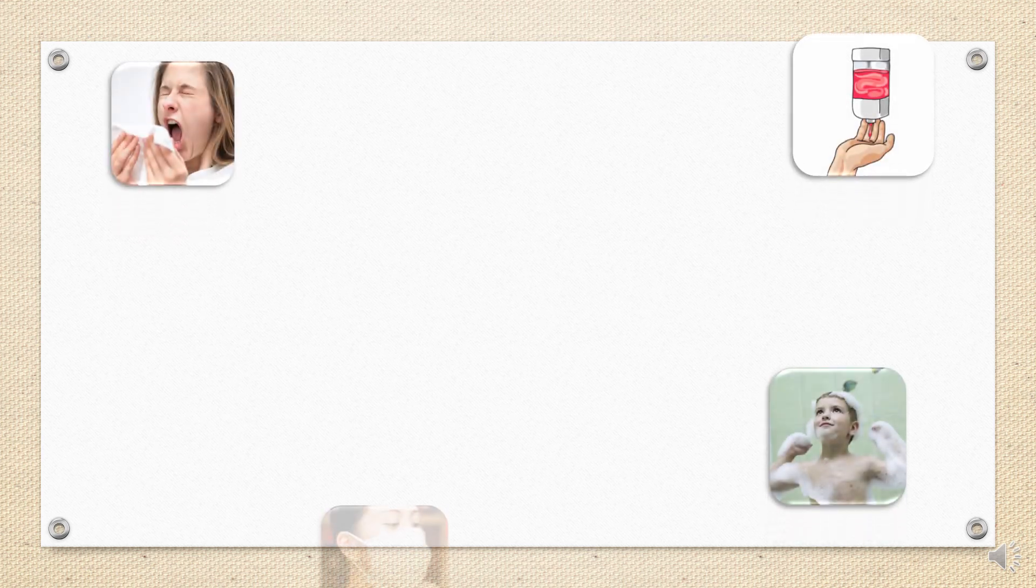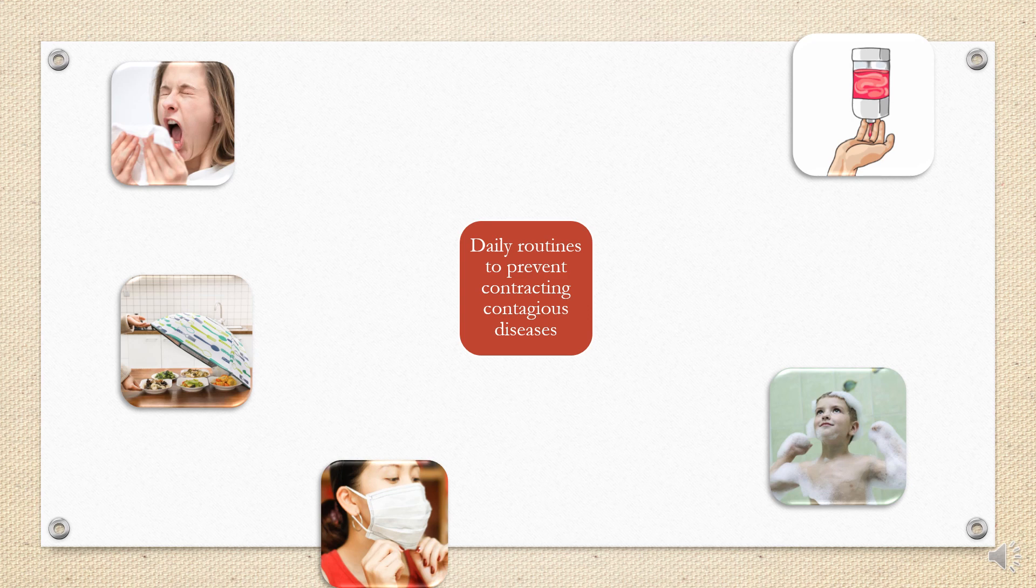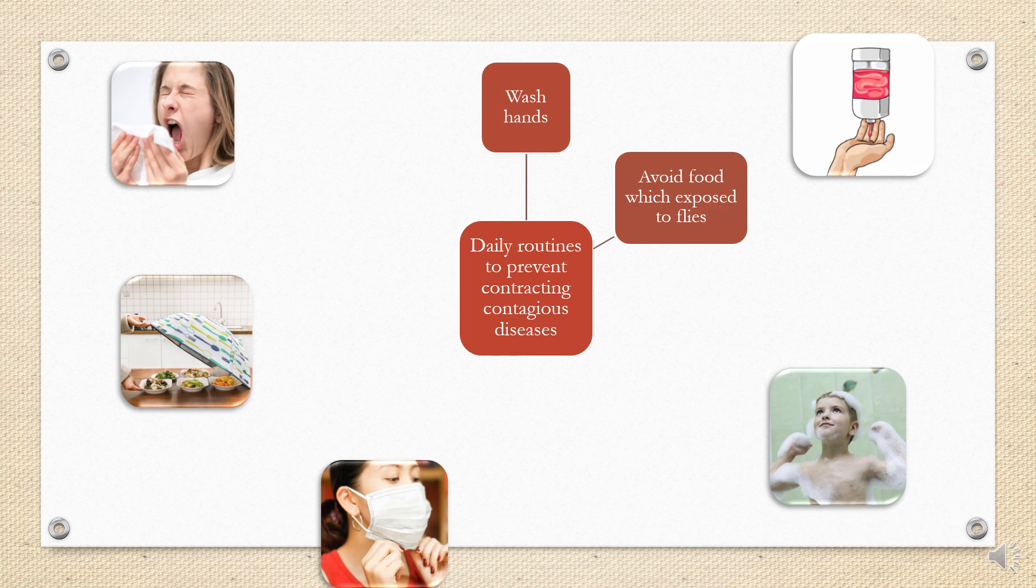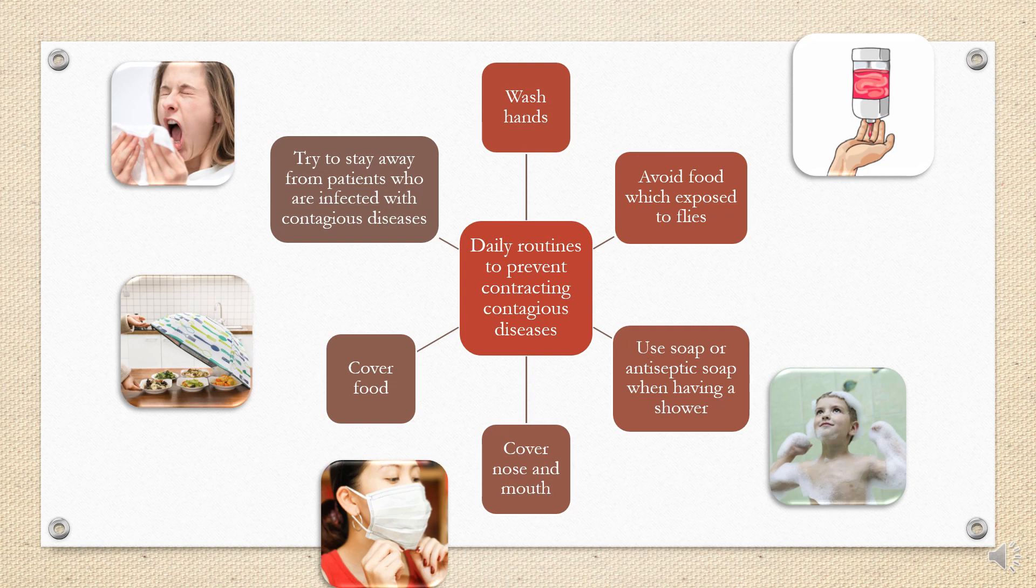This is the daily routine to prevent contracting contagious disease. Wash hands. Avoid food which is exposed to flies because flies can bring microorganisms. Flies touch the trash and then step on your food. So make sure to avoid food which is exposed to flies. Use soap or antiseptic soap when having a shower, and cover nose and mouth. Cover food and try to stay away from patients who are infected with contagious disease.